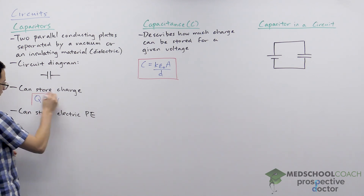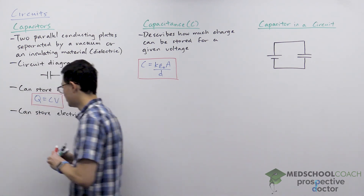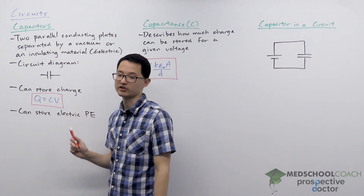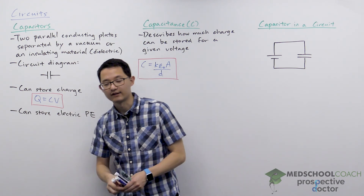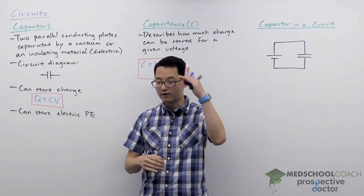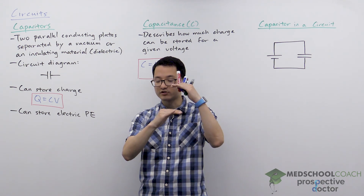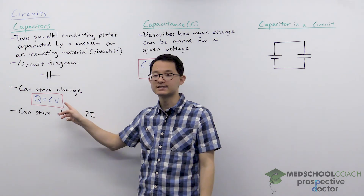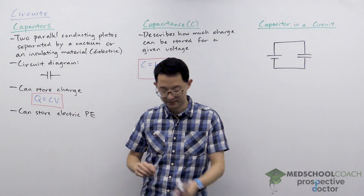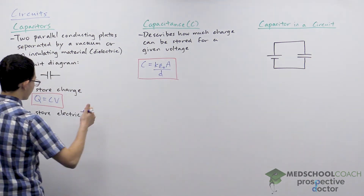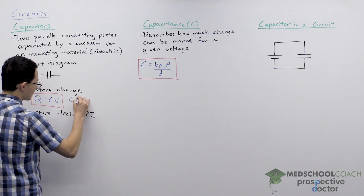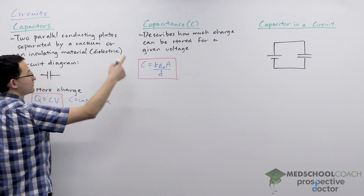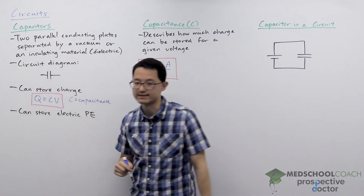In the equation Q equals C V, Q is the charge stored on the capacitor and V is the voltage across the capacitor. The fact that one plate stores positive charge and the other stores negative charge means there's a potential difference across the capacitor — that's the voltage. C is called the capacitance, which we'll discuss very soon.